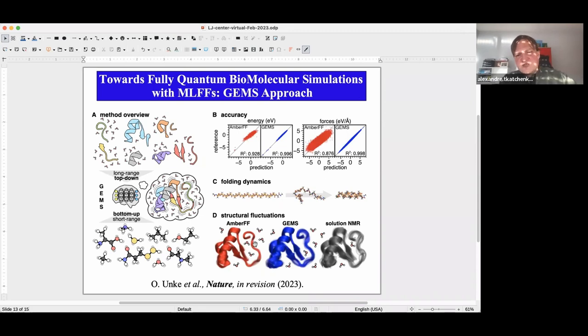We also did simulations of crambin. Here we do not do full dynamics because this is still out of the reach of current architectures. But we here compare, so we do this in explicit water. Actually, this is the first time where you have full quantum description of protein water system. We have a huge water box, 25,000 atoms in total. And this is trained on just quantum mechanical data. So if you look at the, this is an NMR ensemble of the crambin protein. Here is the Amber ensemble and here is a solution NMR. And you can already see visually that the GEMS ensemble is significantly closer to the solution NMR structure than the Amber FF ensemble which is significantly more rigid.